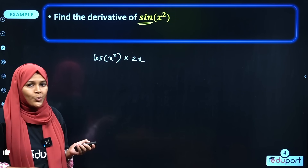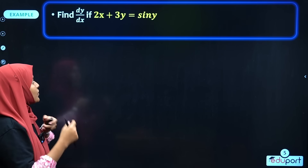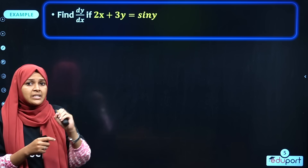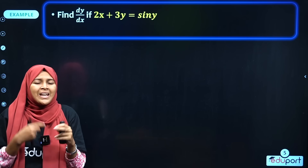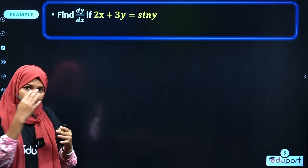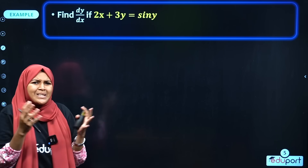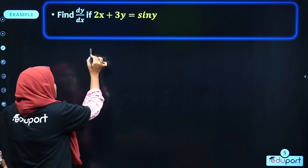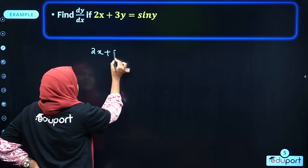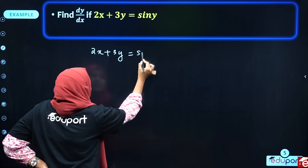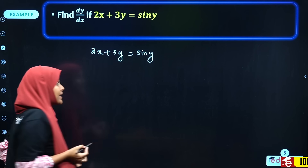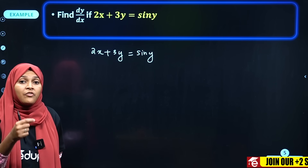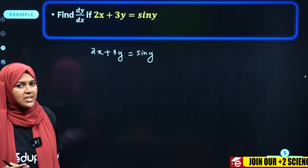We can differentiate using the chain rule. The next question: given 2x + 3y = sin(y), find dy/dx. This is implicit differentiation — x and y are mixed in the equation, and we want to find dy/dx.